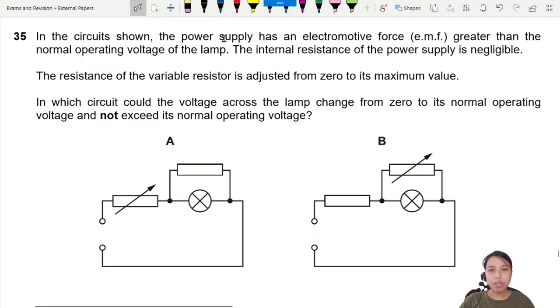In the circuits shown, the power supply has an electromotive force greater than the normal operating voltage of the lamp. So I'm assuming in this picture, power supply will be this connection here and it's bigger EMF than what the lamp needs normally. Internal resistance is negligible, that's good.